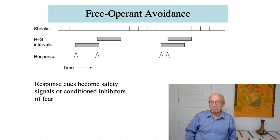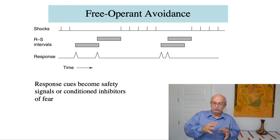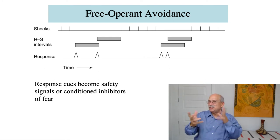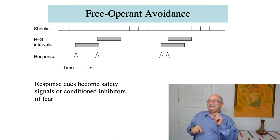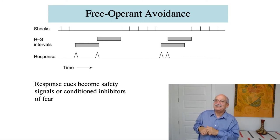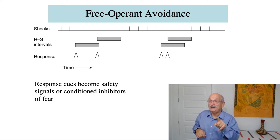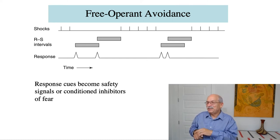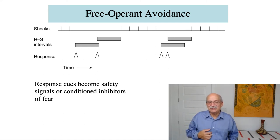Before they sent John Glenn up into space, NASA was interested in whether G-forces during liftoff and the weightless environment of space would disrupt behavioral judgments. So they sent monkeys up into space before human beings, and those monkeys were responding on a free operant avoidance procedure like this. This was work supervised by Joe Brady, who was the head of the behavioral laboratory at Walter Reed Medical Center.